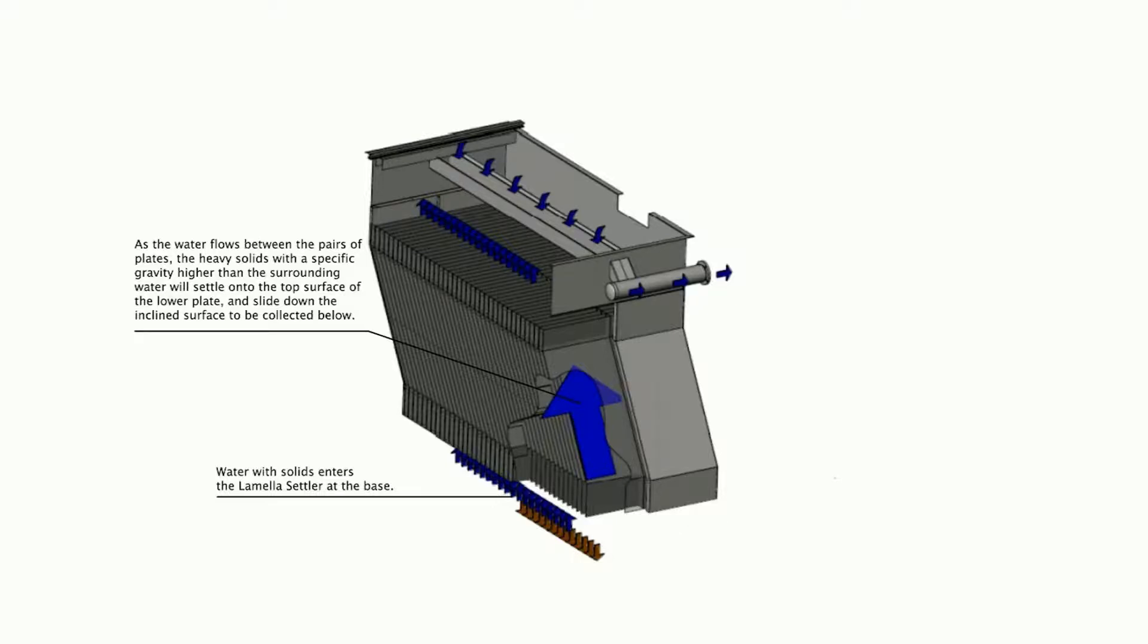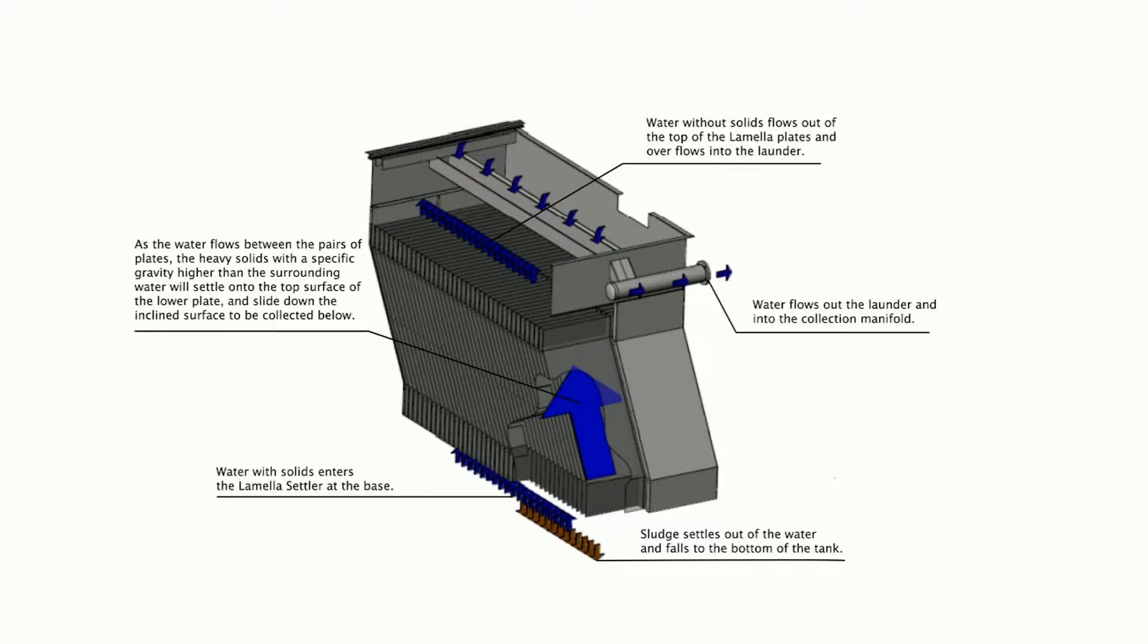As the water flows between pairs of plates, the heavy solids with a specific gravity higher than the surrounding water will settle onto the top surface of the lower plate and slide down the inclined surface to be collected in the sludge hopper. Clear, nearly solid-free water then exits the top of the plate area and flows over an adjustable weir.